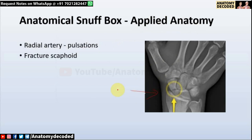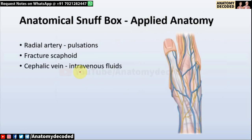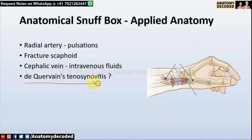In this X-ray we can see a fracture of the scaphoid — whenever there is such a fracture, there will be tenderness in the anatomical snuff box. Additionally, the cephalic vein, which is present in the roof of the anatomical snuff box, is located more towards the base of the snuff box, making it preferred for intravenous fluid access if other veins are not easily accessible.